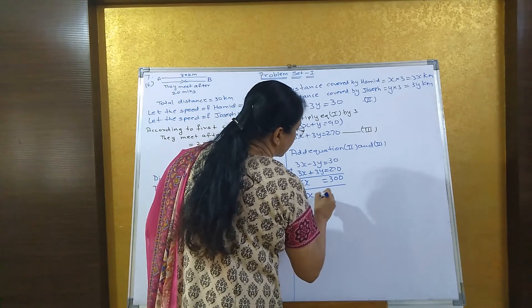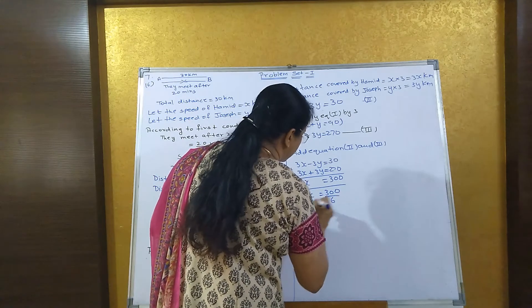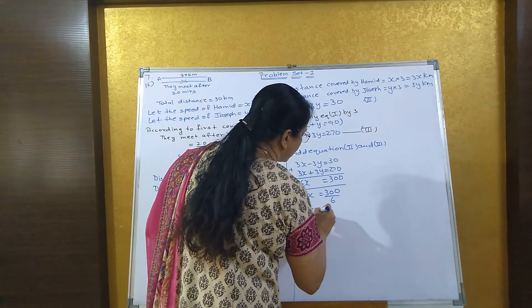Therefore, x equals 300 upon 6. Therefore, x equals 50.